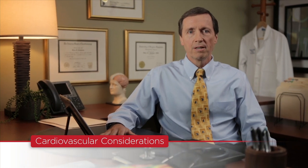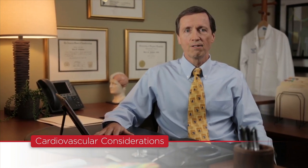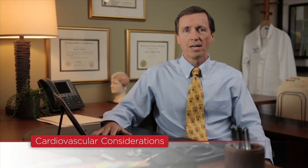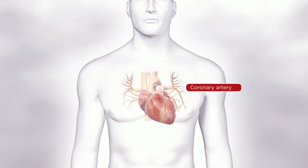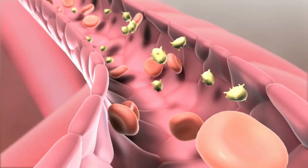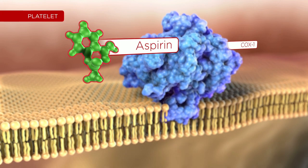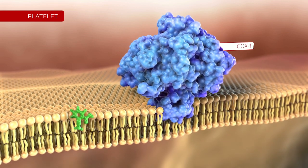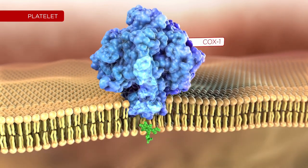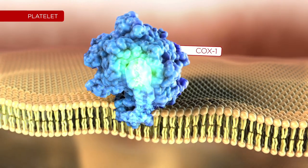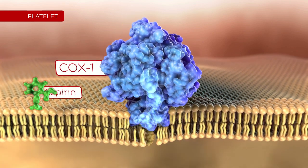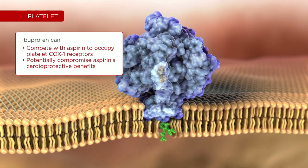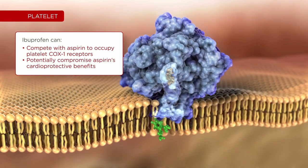You likely have many patients in your practice who are on aspirin heart therapy. For these patients, use of ibuprofen can interfere with aspirin's cardioprotective mechanism. Cyclooxygenase 1 plays a role in platelet function. Aspirin interaction with platelet COX-1 receptors mediates the cardioprotective benefits of aspirin therapy. In patients on such therapy, ibuprofen may compete with aspirin to occupy platelet COX-1 receptors, potentially compromising aspirin's cardioprotective benefits.